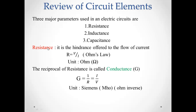Now we are learning the reciprocal term of resistance, which is 1 by R. That is conductance, denoted by the letter G. G is equal to 1 by R. Since R equals V by I, G equals I by V. The unit of conductance is Siemens.